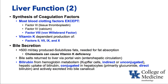The liver synthesizes coagulation factors — most of them — with the exceptions being factor III (tissue thromboplastin), factor IV (calcium), and factor VIII von Willebrand, which is not made by the liver. Factors II, VII, IX, and X are the ones that are vitamin K dependent.